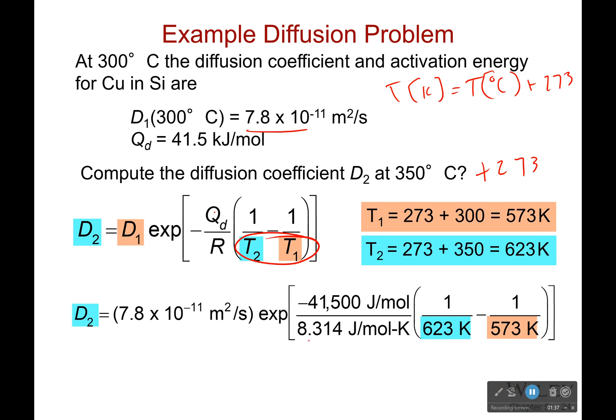Another thing to be careful about: one, make sure that your value for the universal gas constant R is the one that has joules in it. And two, it says kilojoules per mole so make sure that you convert that to regular joules. I get my D₂ equals 15.7 × 10⁻¹¹ m²/s.